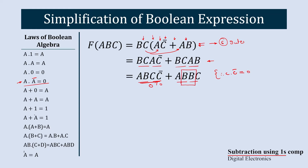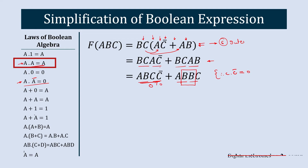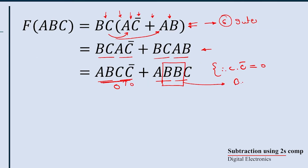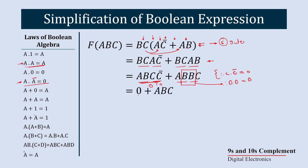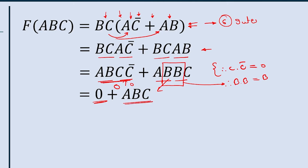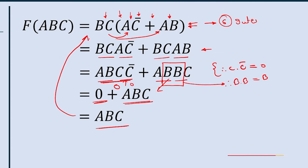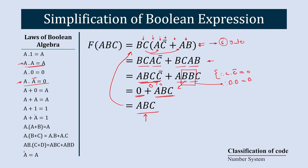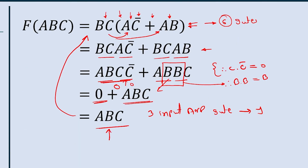Now looking at the remaining term, we have B · B. By the identity law, A · A = A, so B · B = B. Therefore, this term simplifies to A · B · C. The simplified version of this Boolean expression is A · B · C. Now let's see how many gates are needed to implement this. With a three-input AND gate, only one gate is required, or with two-input AND gates, we need just two gates.